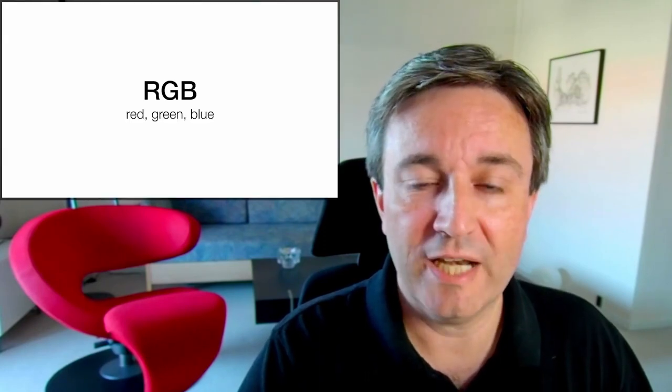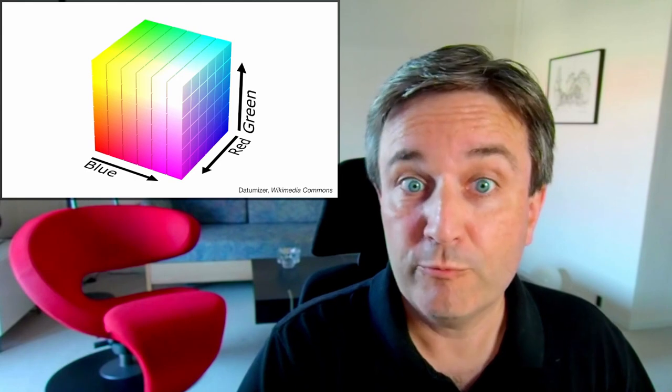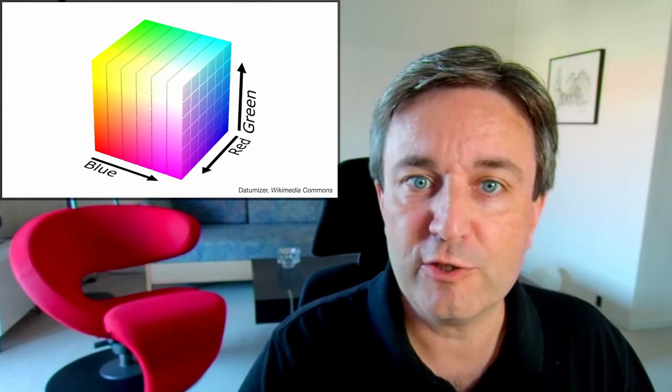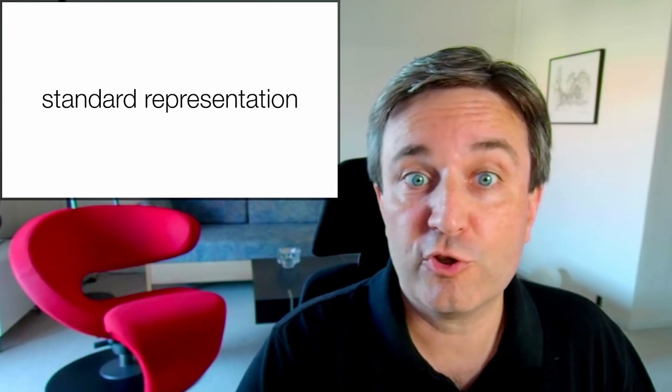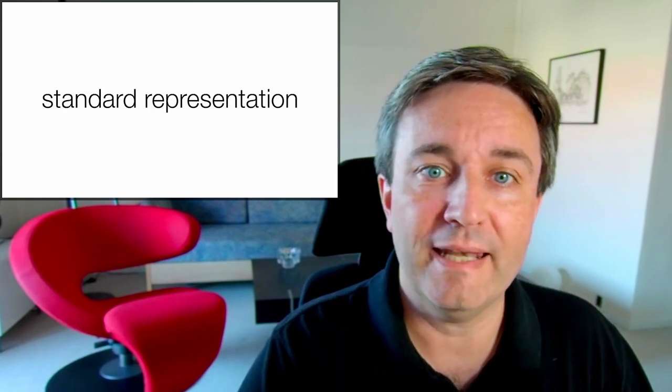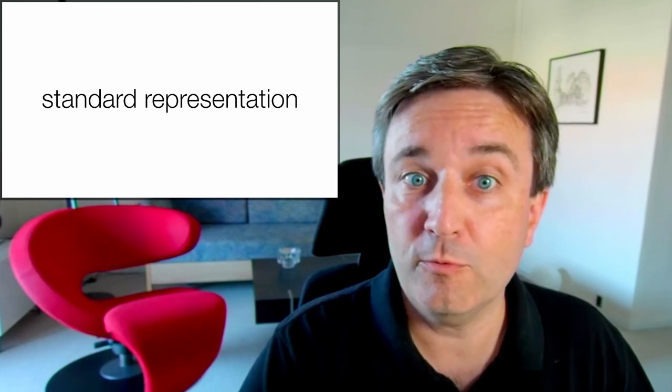Let's start with RGB: red, green, blue. We've probably all seen a color cube like this before. And it is the standard representation of color because the way we mix colors is by combining red, green, and blue light to make the other colors.